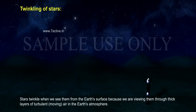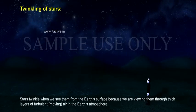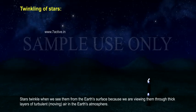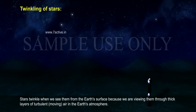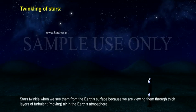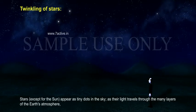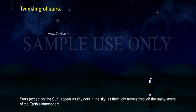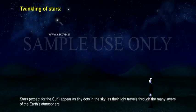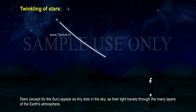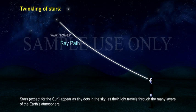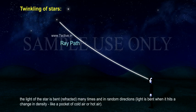Stars twinkle when we see them from the Earth's surface because we are viewing them through thick layers of turbulent, moving air in the Earth's atmosphere. Stars, except for the sun, appear as tiny dots in the sky. As the light travels through the many layers of the Earth's atmosphere, the light of the star is bent — refracted — many times and in random directions.